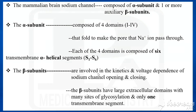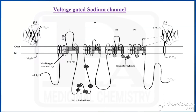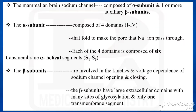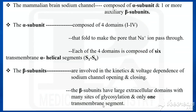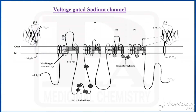The beta subunits are involved in the kinetics and voltage dependence of the sodium channel opening and closing. They have large extracellular domains with many sites for glycosylation and only one transmembrane segment, whereas the alpha subunit has six transmembrane segments (S1 to S6).